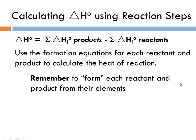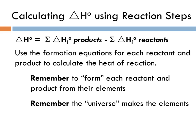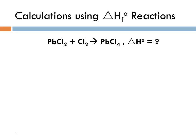We're going to remember that we have to form each reactant and product from their elements — the universe takes care of us and makes the elements for us. For each substance involved that isn't an element, we're going to use equations and make them from their elements. As an example equation, we have lead(II) chloride plus chlorine reacting to produce lead(IV) chloride, and we're going to calculate the delta H for this reaction.